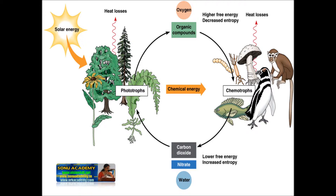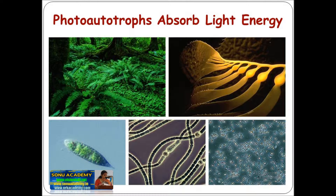Points to be remembered in this lesson: Autotrophs are able to synthesize all the required nutrients from simple inorganic compounds. They require minerals, water, and carbon dioxide for this purpose. Several bacteria, algae, and higher plants are photoautotrophs and use light as a source of energy to synthesize complex organic molecules.